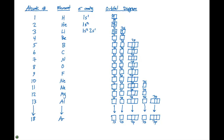For beryllium, our electron configuration is going to be 1s2, 2s2, for a total of four electrons. The orbital diagram then would have two electrons in each of the 1s and the 2s orbitals, with one spin up and one spin down in each of those orbitals.